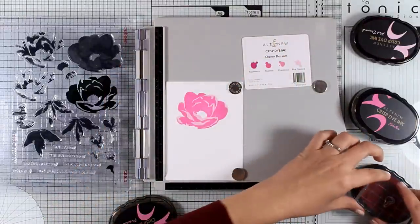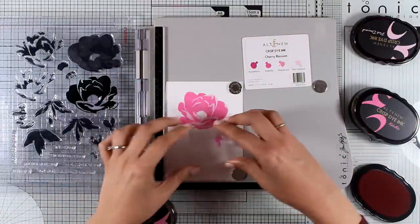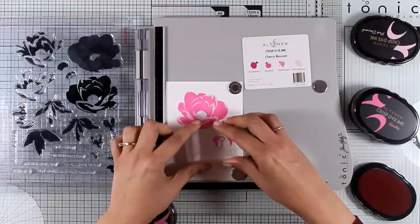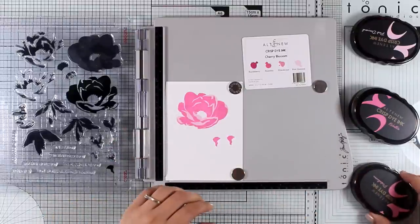Now since I have those pink inks out I am going to stamp some tiny little buds that are also available in this stamp set so that I don't have to bring out those inks again later on.